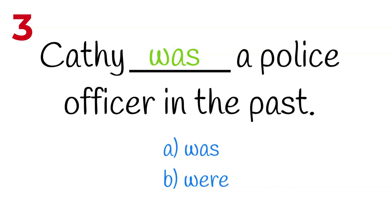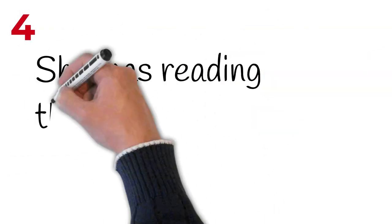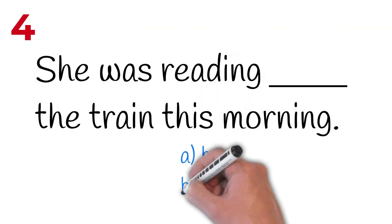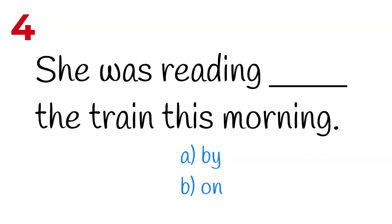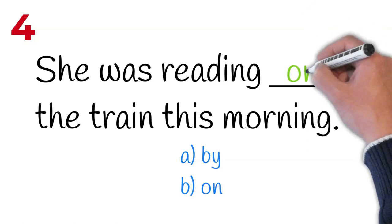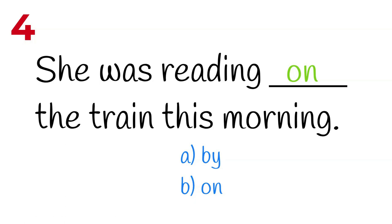Entre el 'was' y el 'were', recuerda que tenemos que concordar el verbo con la persona. En este caso, Cathy es singular y por eso tenemos que utilizar 'was' en lugar de 'were'.